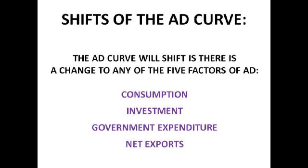Finally, we're moving on to net exports. There are three big things that will have an impact on this: the demand for exports, the exchange rate, and UK economy growth. If there's no demand for our exports, the AD curve will shift left. That might happen if UK trading partners are in recession, so they're not willing to buy our goods or services. But if they're growing and buying more of our goods and services, demand for exports is rising, so we will export more — that will be a right shift of the aggregate demand curve.